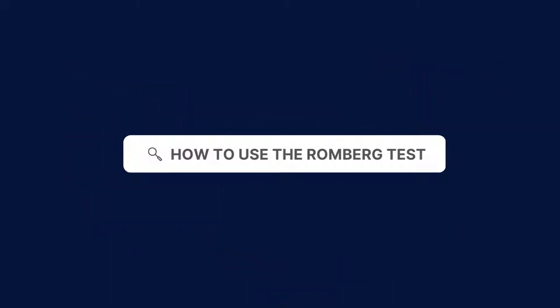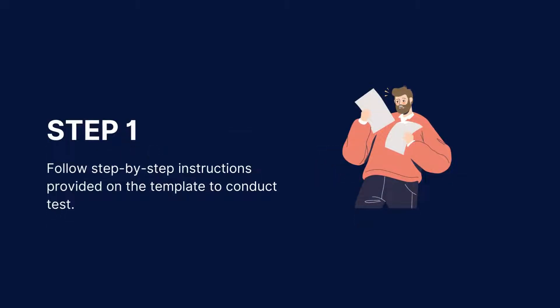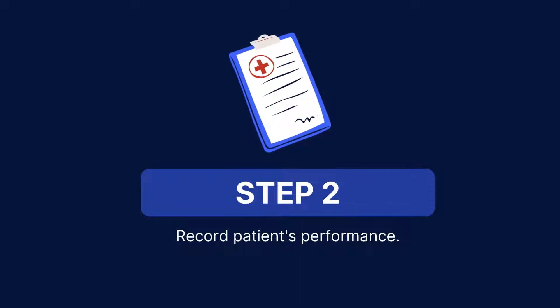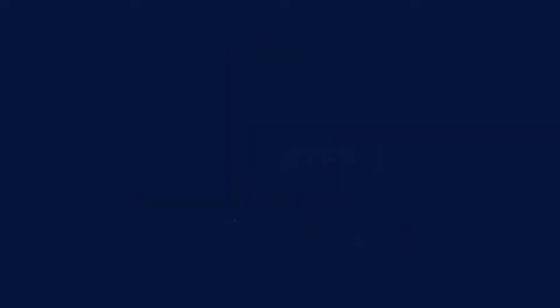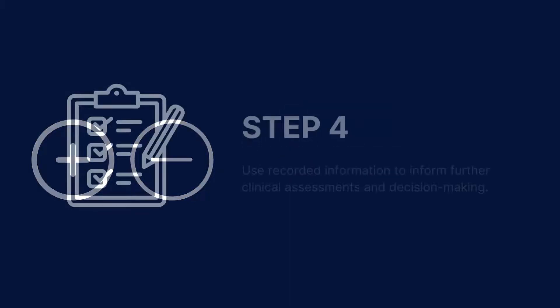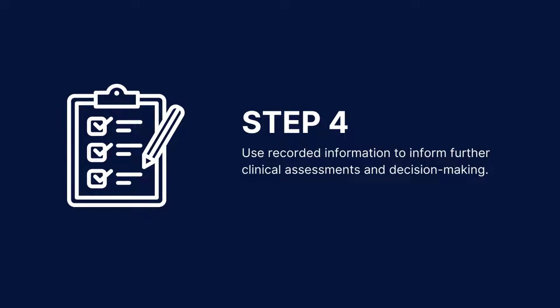To use our free Romberg test, follow these steps. Download our Romberg test from the CarePatron platform, which you can find in the link in the description. Follow the step-by-step instructions provided on the template to conduct the test. Record the patient's performance, noting any significant swaying or loss of balance. Document the test results, including whether the Romberg test is positive or negative. Use the recorded information to inform further clinical assessment and decision making.